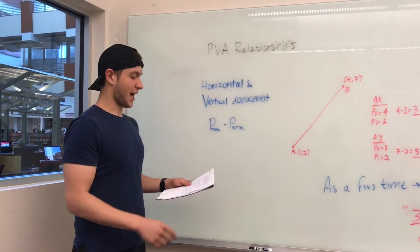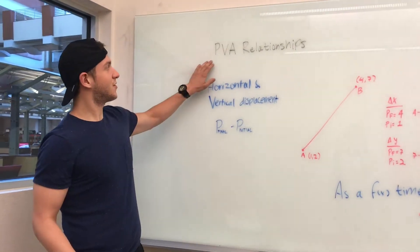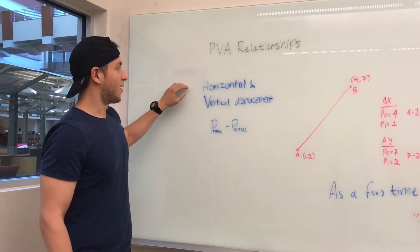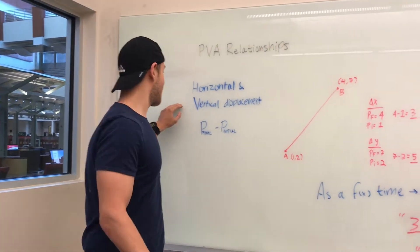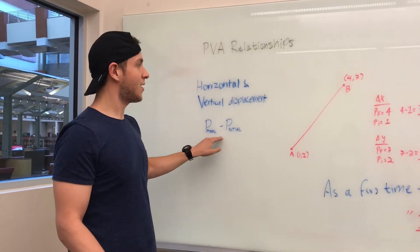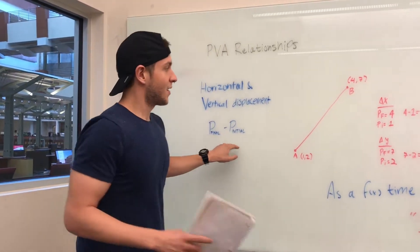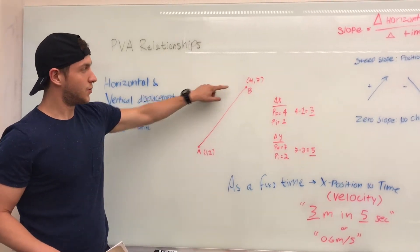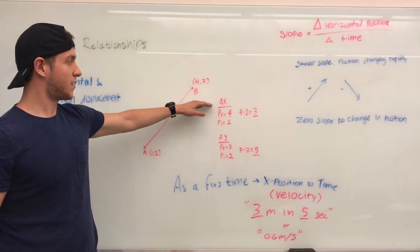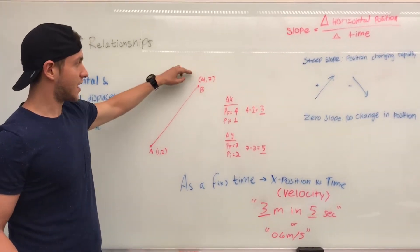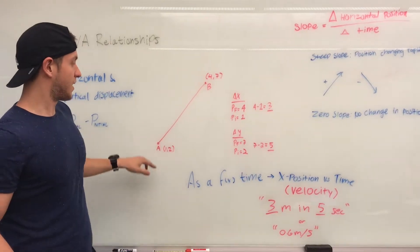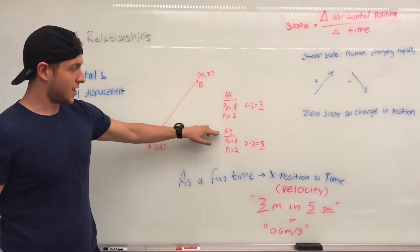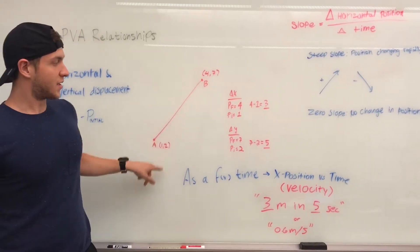In a time history analysis, position, velocity, and acceleration have a relationship. Horizontal and vertical displacement can be measured by P final minus P initial. Here we have point A and point B. To find the distance between the two, we find the change in X first — P final is the X coordinate 4, minus A's coordinate of 1, giving you 3. The change in Y gives you 7 minus 2, which is 5.